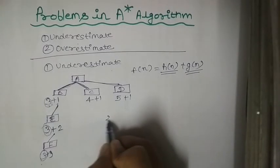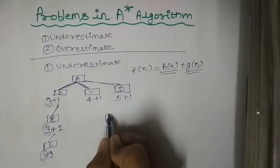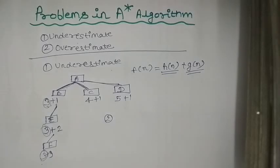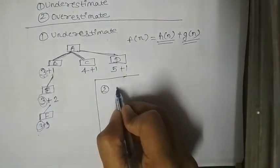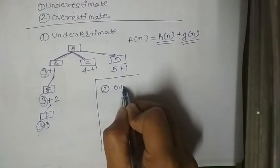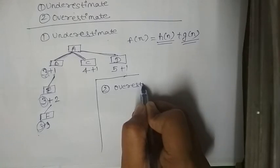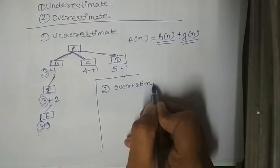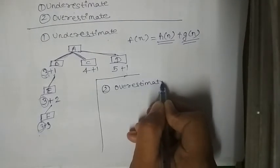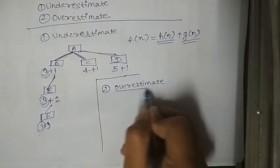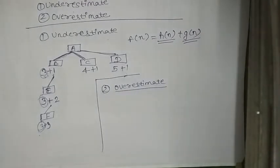Now for the second one — I am just drawing the second one here as we have less space. The second one will be overestimate. As the name suggests, here it is a case of overestimation.